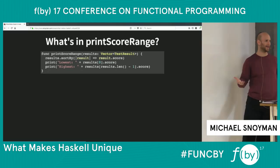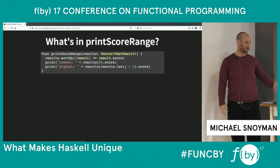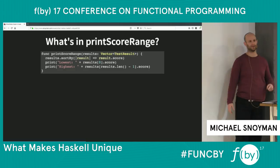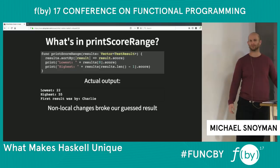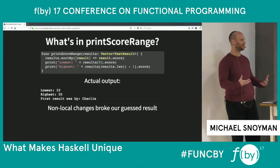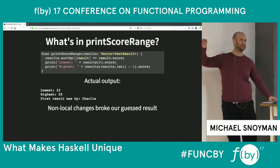Consider this implementation: the easiest way to get the lowest and highest value is to sort the list. So I've taken my vector, sorted it in place, and printed the lowest and highest. Now the actual output is that Charlie is first — because Charlie had the lowest test score. This is an example of a non-local change affecting your code. There's no way to know what's going to happen in main unless you look at the rest of the program, because any variable that's been passed around can now be mutated. This is what we mean by reasoning about code — we'd like to look at one part of a program and understand it.